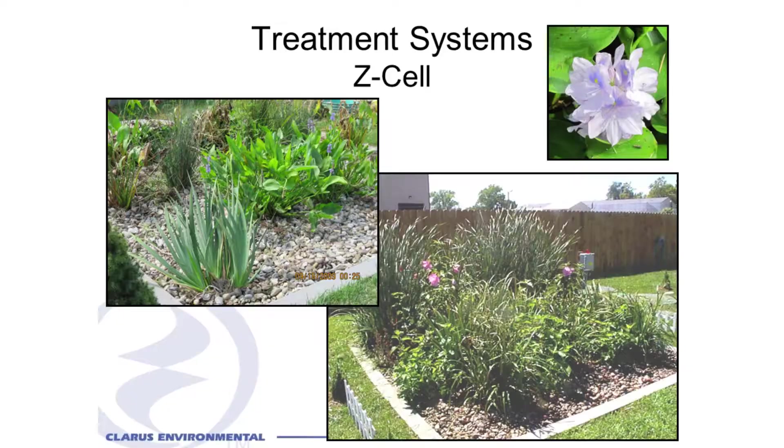We have the Z-cell wetland, which is very similar to the recirculating gravel filter. This works kind of the opposite: instead of the effluent coming in on the top like it does on the gravel filter and trickling down and draining out the bottom, we pump the effluent into the bottom to fill this box up with effluent.